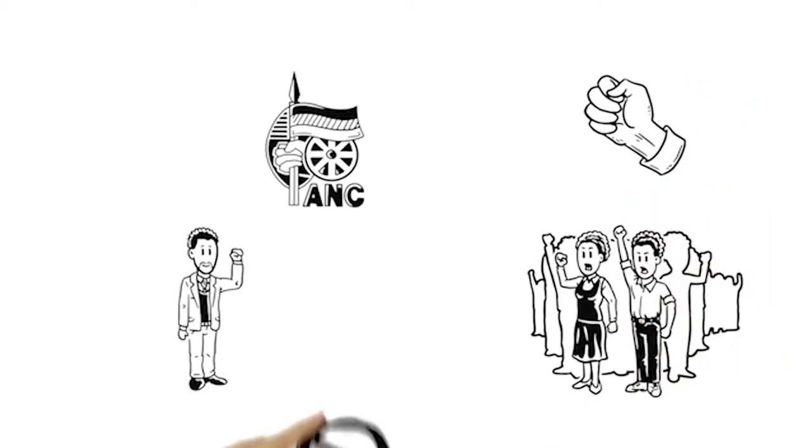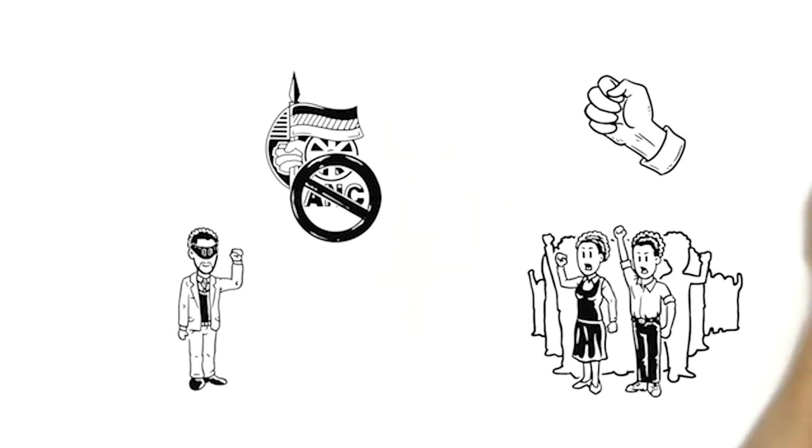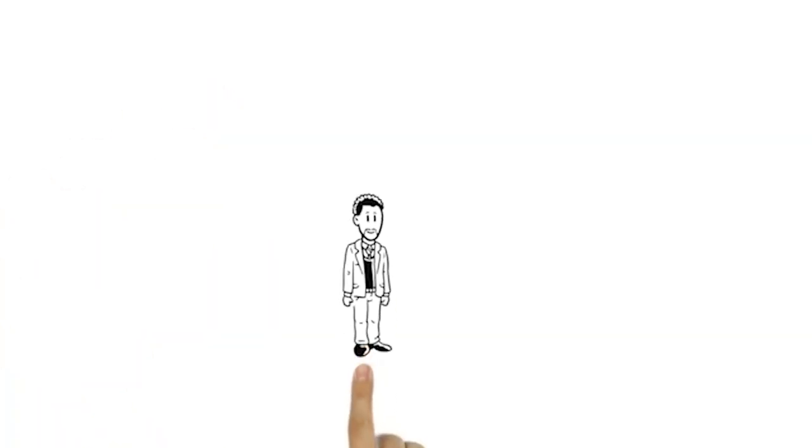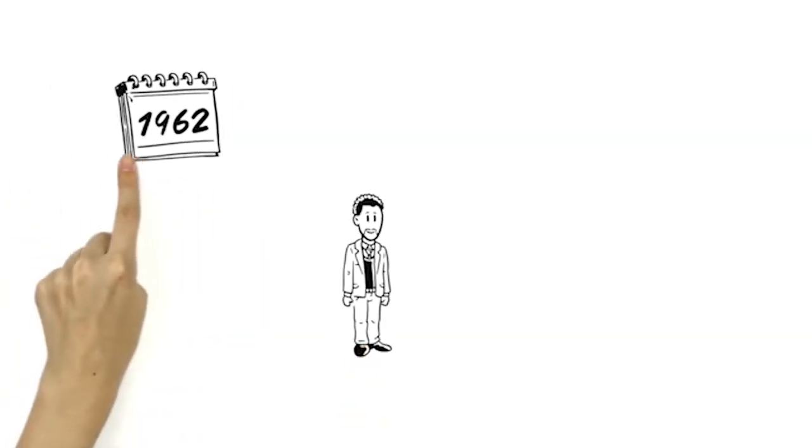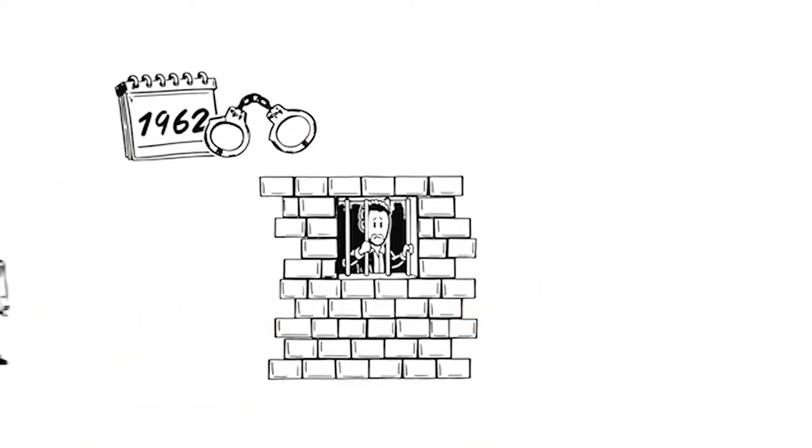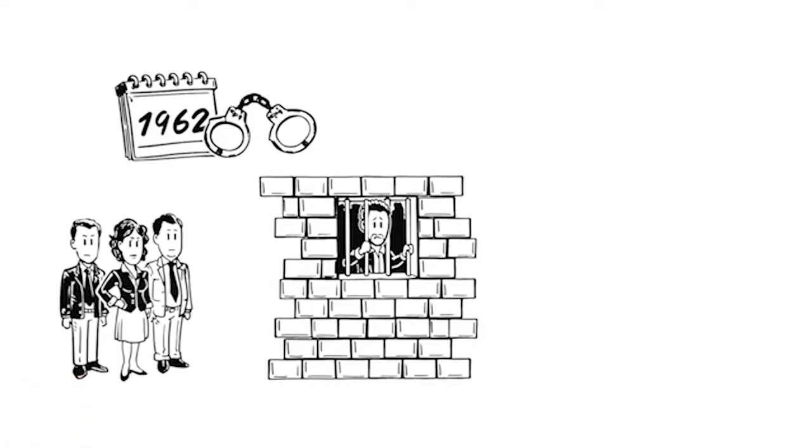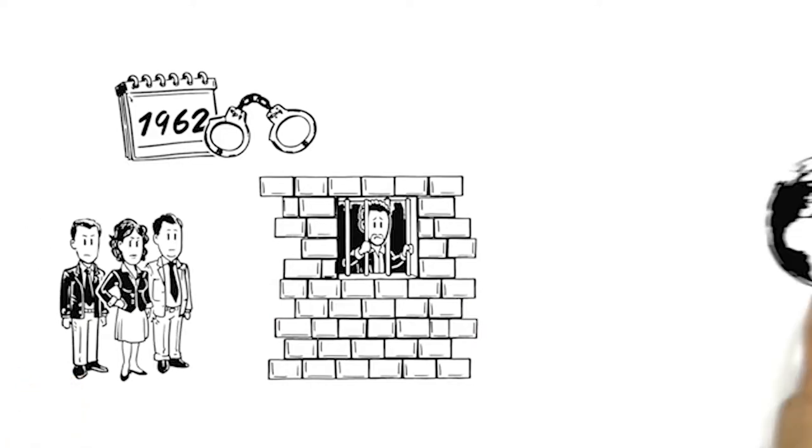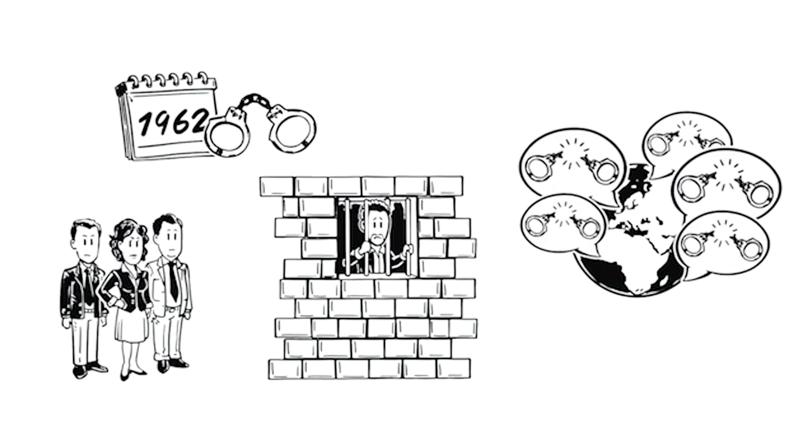Mandela's struggle went underground, but Mandela couldn't hide forever. In 1962, he was arrested and sentenced to life in prison as a terrorist. Although some Western politicians supported his imprisonment, more and more people around the world advocated for his release.